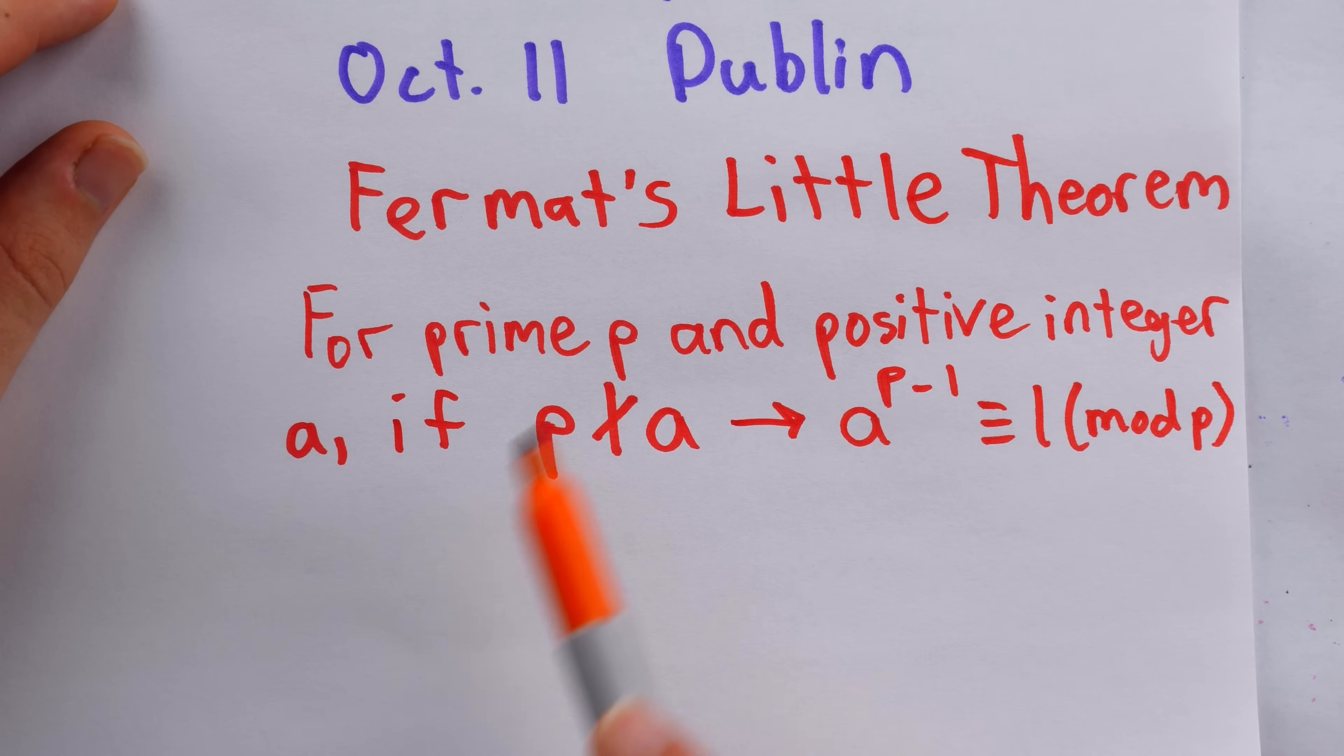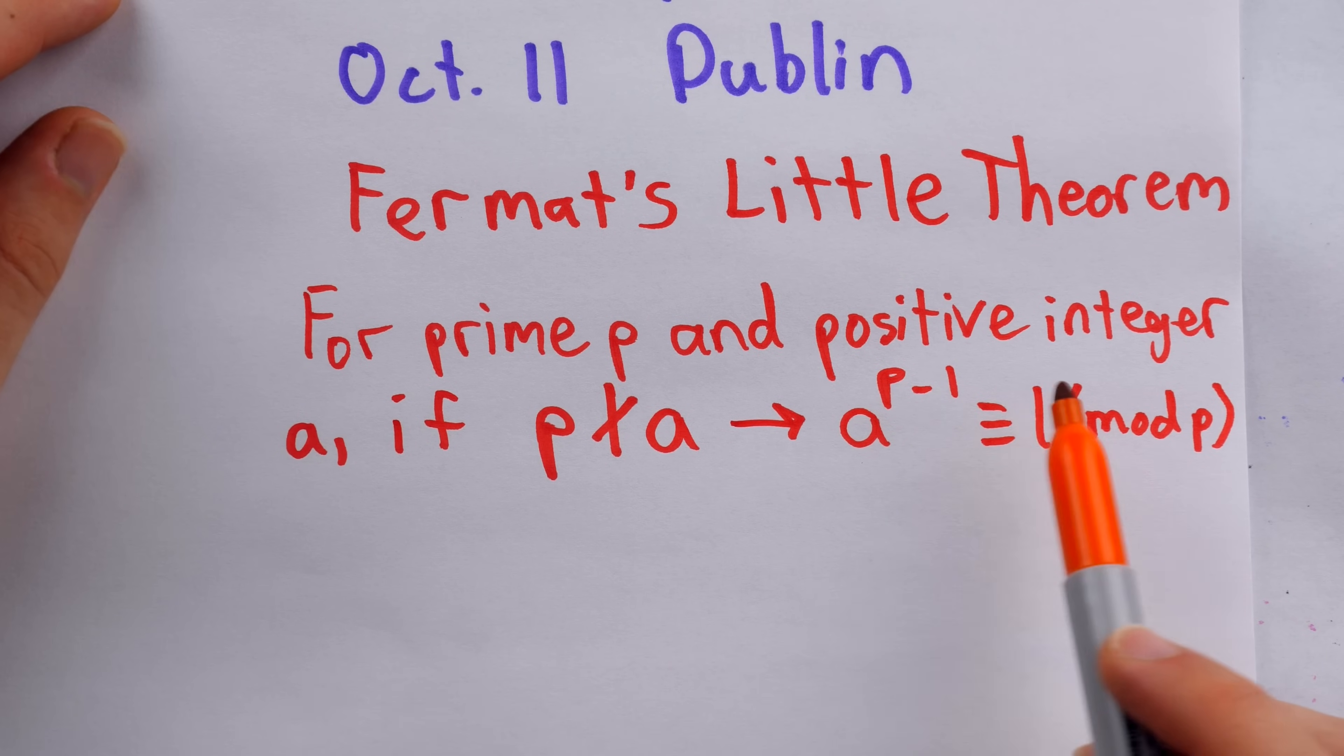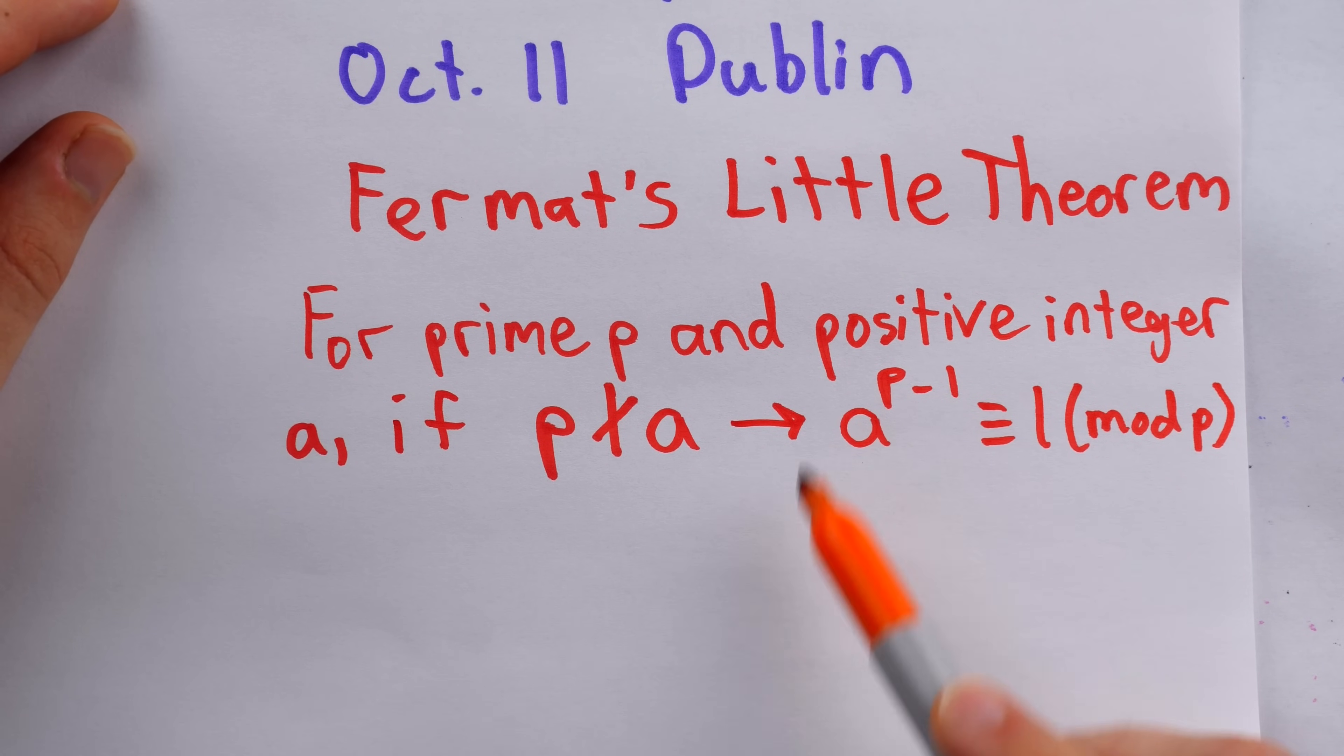Now Fermat's Little Theorem tells us that this is the case for a prime number p, that's when this applies, but it turns out that this congruence relationship, generally speaking, is not going to be true if p is composite.